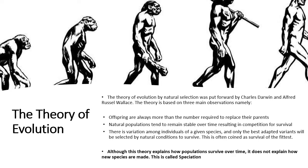The second observation is that natural populations tend to remain stable over time, resulting in competition for survival. This is something you can easily relate to the way we exist in the world today — there is a lot of competition for space, for food, for resources, because we basically live in overpopulated areas.